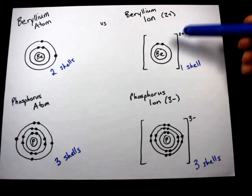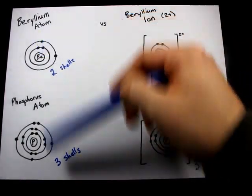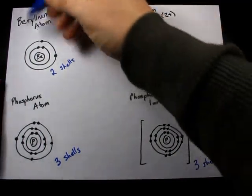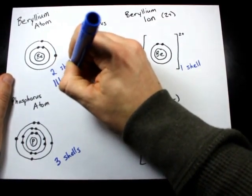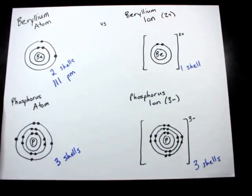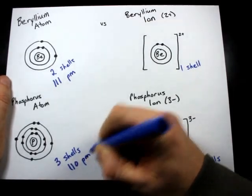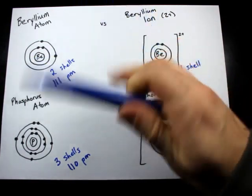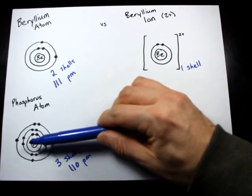And so all of the metals should be smaller than their atoms are. I strategically picked these two because beryllium on its own has an atomic radius of 111 picometers, and phosphorus's atomic radius is 110. They're basically the same size when they're neutral.